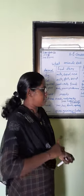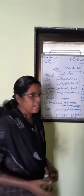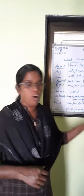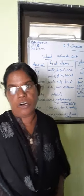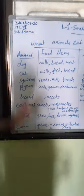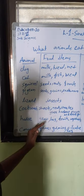Next one, cow. Cow eats grass, grains, oil cake, and kale also. So all these different animals eat different, different foods.